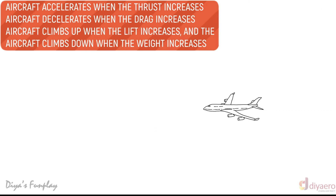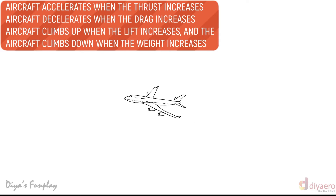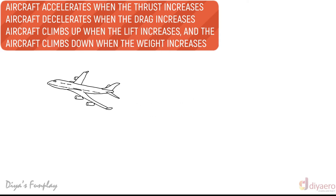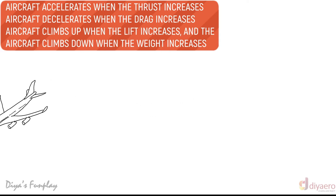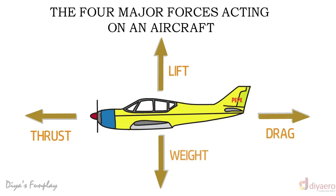An aircraft accelerates when the thrust increases, and decelerates when the drag increases. The aircraft climbs up when the lift increases, and climbs down when the weight increases. In conditions when lift is exactly balanced by weight and thrust is exactly balanced by drag, the aircraft is said to be in a state of equilibrium. At this condition, the aircraft will neither accelerate nor decelerate, and will continue flying at the same velocity and direction unless a pilot or a gust of wind changes the situation.